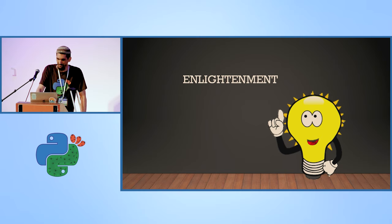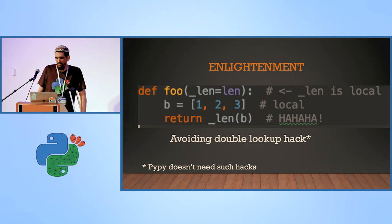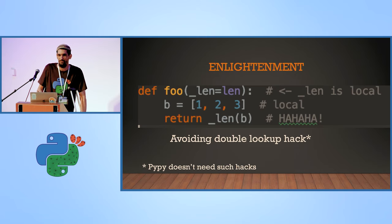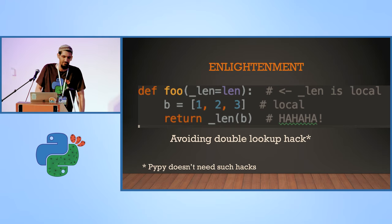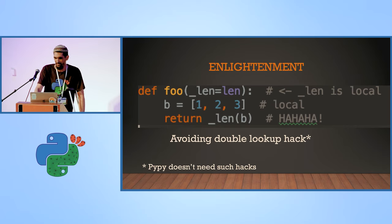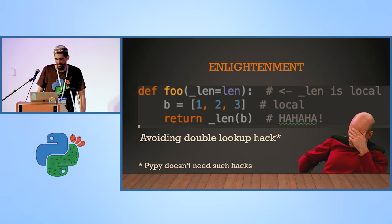We got to the third part — we're gonna dive a bit deeper and see what we understand by looking at the bytecode. We know this example: you take len and put it inside the default argument, and then when you use it, you have a local lookup, which is much faster than doing two lookups in a dictionary. Here you just have an index in a local array and you find it fast. As I mentioned, PyPy doesn't need it because it has a JIT.